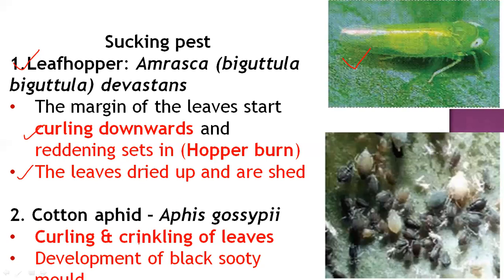The second sucking pest is the cotton aphid, also called plant lice. It causes curling and crinkling of leaves. A major symptom is the secretion of honeydew, which leads to development of black sooty mold — a severe fungus that totally affects photosynthesis and arrests further growth of the cotton plant.